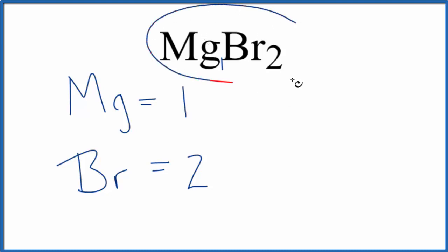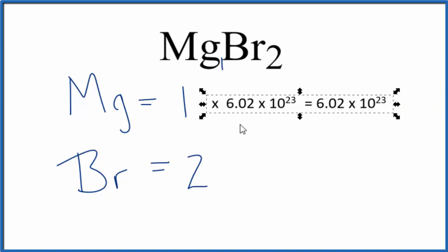Sometimes you're asked to figure out how many atoms of magnesium you have in one mole of MgBr2. So we take the one, that's our one magnesium atom, and we multiply that by Avogadro's number, 6.02 times 10 to the 23rd. That tells us how many magnesium atoms we have in one mole of MgBr2.